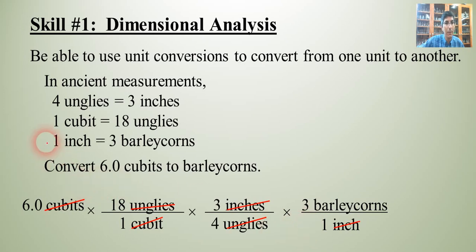And now all I have to do is the arithmetic. So in my calculator, I would take the 6.0 times 18 times 3 divided by 4. Any time there's a number in the denominator, you divide times 3. And when you multiply and divide these numbers out, you get an answer of 243 barley corns. So hopefully that's something that you remember how to do. And if you've forgotten or just need a refresher, well, here's how you do it.